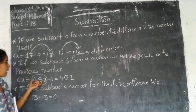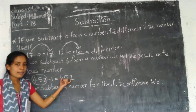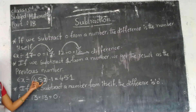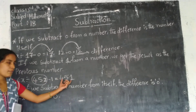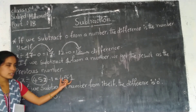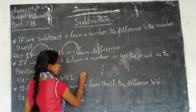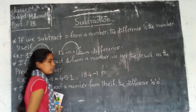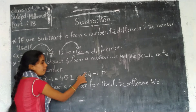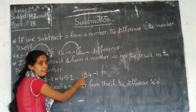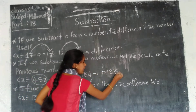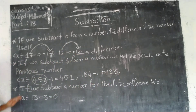When we subtract 1 from a number, the answer is the previous number — the number that comes just before it. What is the number before 452? Yes, 451. In the same way, 154 minus 1: the previous number of 154 is 153. So this is the second property.